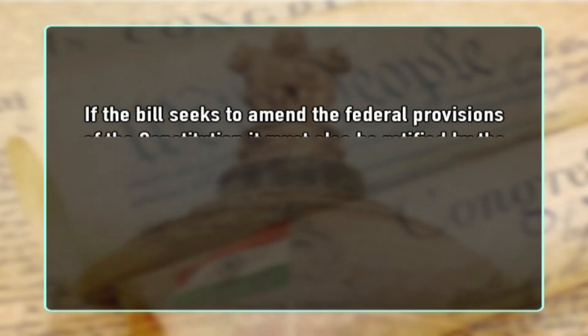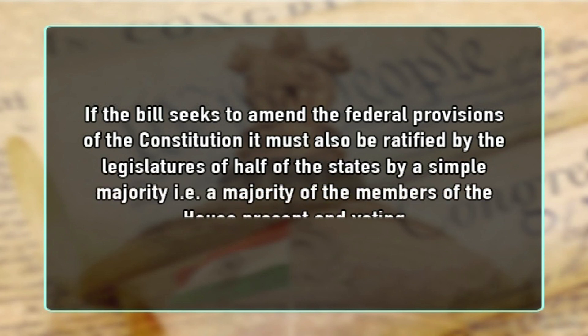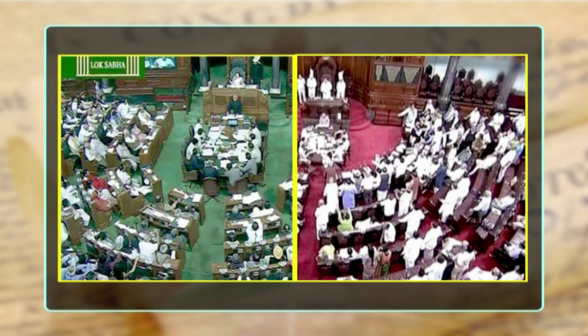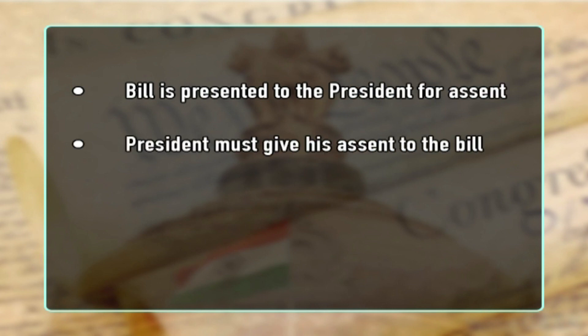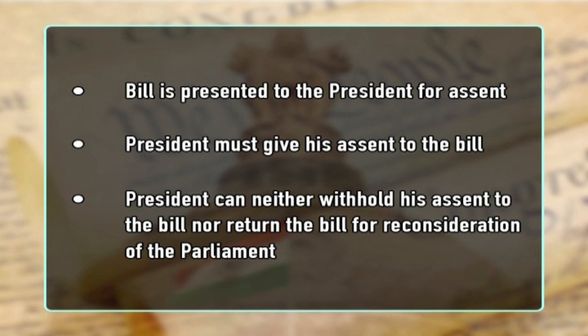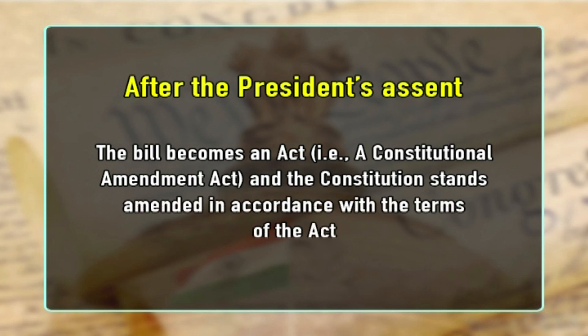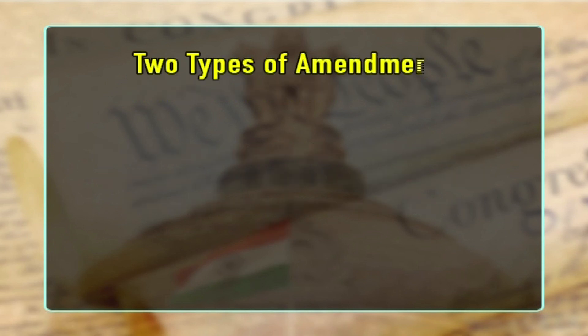Each house must pass the bill separately. In case of a disagreement between the two houses, there is no provision for holding a joint sitting of the two houses for the purpose of deliberation and passage of the bill. If the bill seeks to amend the federal provisions of the constitution, it must also be ratified by the legislatures of half of the states by a simple majority, that is, a majority of the members of the house present and voting. After duly passed by both houses and ratified by the state legislatures where necessary, the bill is presented to the president for assent. The president must give his assent; he can neither withhold his assent nor return the bill for reconsideration. After the president's assent, the bill becomes an act — a constitutional amendment act — and the constitution stands amended in accordance with the terms of the act.